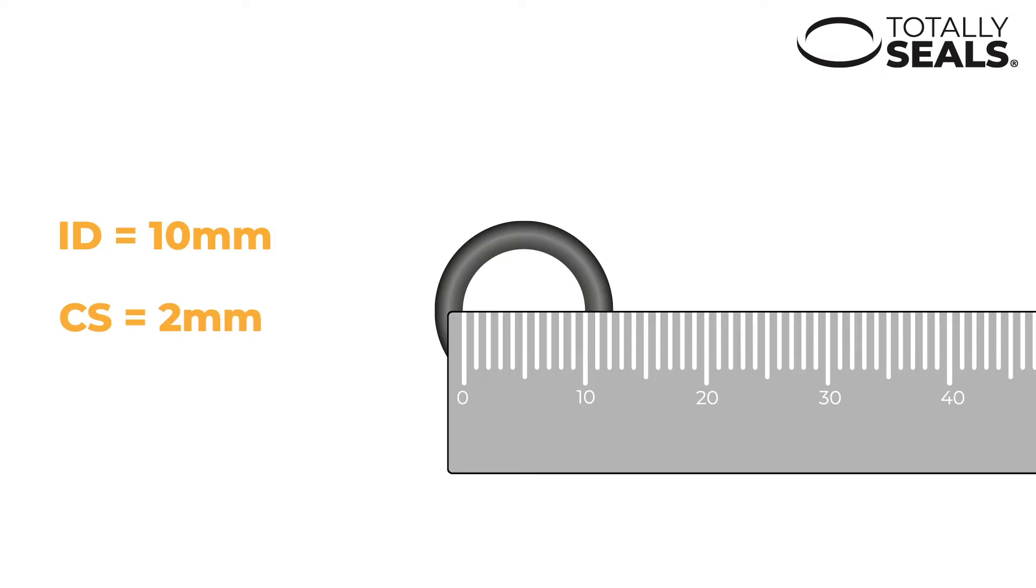Once you have these two measurements, you can easily find the O-ring you need because as standard, sizes are displayed in the format of inner dimension by cross section.